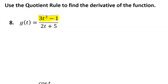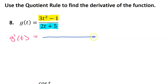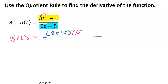Function g can be looked at as the quotient of two functions. We've got 3t squared minus 1 as the high and 2t plus 5 as the low. So we're going to use the quotient rule to find g prime of t. The quotient rule goes low d high less high d low. So low first — I'm going to write the 2t plus 5, that's the low function unchanged. And then it's d high, so I'm taking the derivative of the high function. Using the power rule, this would be 6t, and the derivative of a constant is nothing, so that's gone.